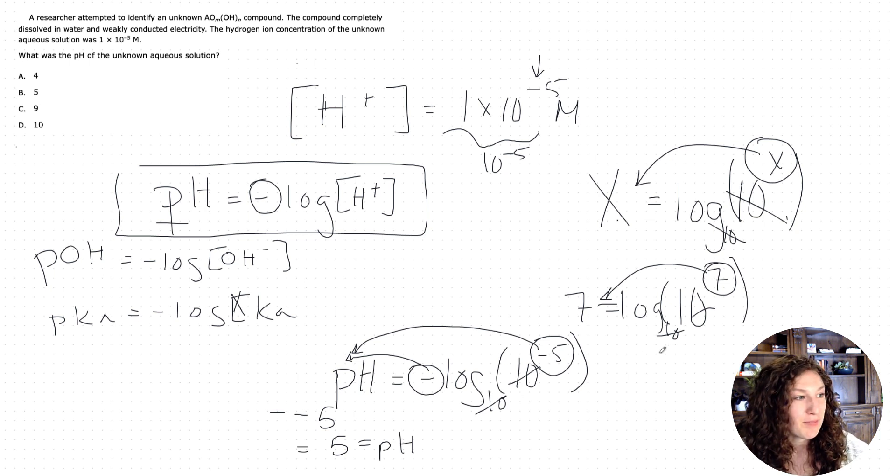So in the future, you can just look at the exponent value, and that is our pH, as long as it's the H+ concentration, which they can also write as H3O+, means the same thing. But making sure that you have the right concentration is the first step, and then calculating from there.